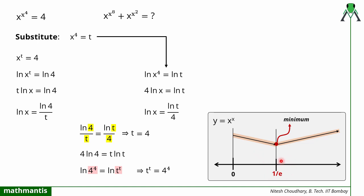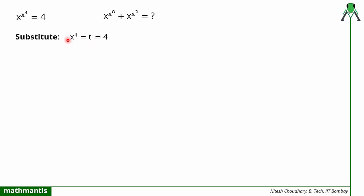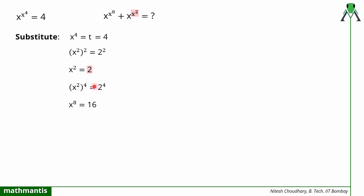So we have confirmed the value of t is equal to 4. Now we find x raised to power x raised to power 8 and x raised to power x squared. Since x raised to power 4 equals t equals 4, I write x raised to power 4 as x squared whole squared equals 4, so x squared equals 2, taking the positive square root. Taking power 4 on both sides of x squared equals 2 gives x raised to power 8 equals 2 raised to power 4, which equals 16.